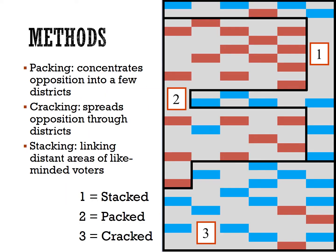So how do politicians gerrymander? There are several ways to redraw a district to give one group an advantage. Packing is when one party is concentrated into just a single district, creating an unnecessarily large majority well above what is needed to win an election — ensuring that party can't win in the surrounding districts. Cracking is when the opposition party is divided up across many districts, diluting their numbers so they don't form a majority in any district. In both strategies, votes are wasted — either because there are way more than needed to win, as with packing, or not enough to ever win, as with cracking.